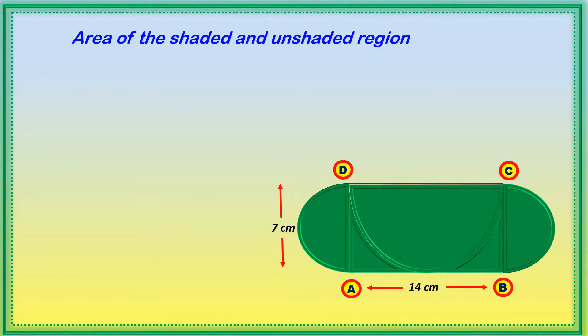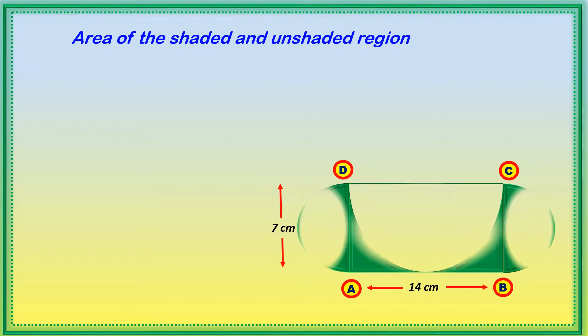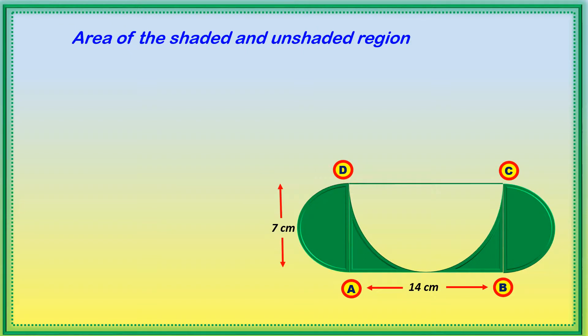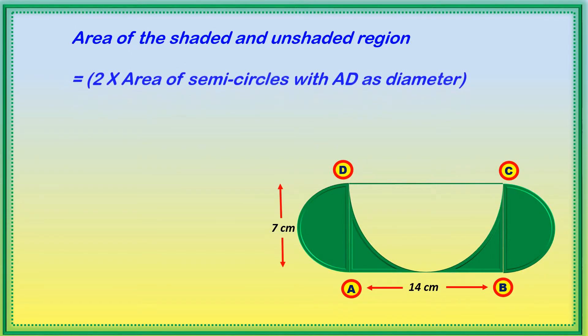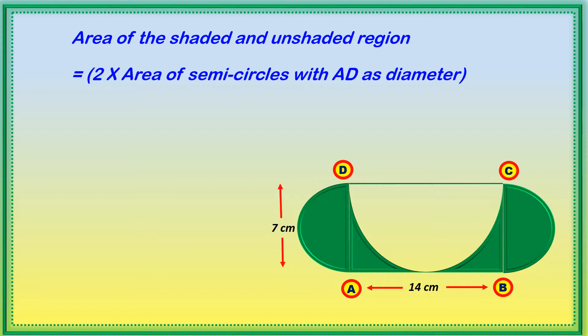The area of the shaded and unshaded region together equals two times the area of semicircles with AD as diameter. Two semicircles are there — one with AD and the other with BC — each with diameter 7 centimeters. If the diameter is 7 centimeters, the radius is equal to half of the diameter, that is 7 by 2. We then find shaded and unshaded region plus area of rectangle ABCD.